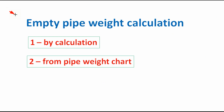For empty pipe weight calculation, we use two methods. Number one: by calculation — in this method, first we calculate the total volume of steel, then we multiply it by steel density. Number two: we can select it from the pipe weight chart according to pipe diameter and its schedule.